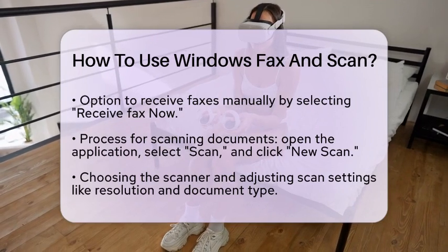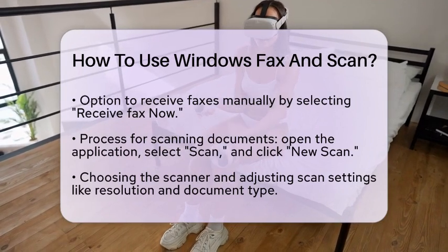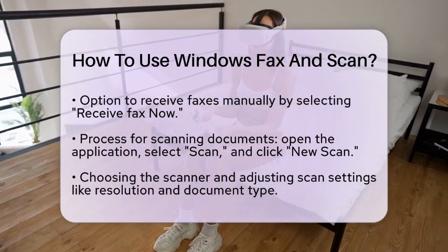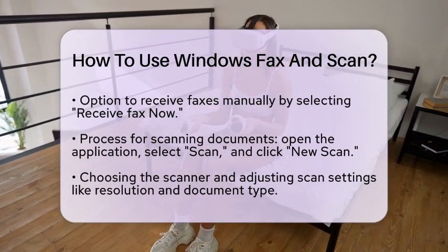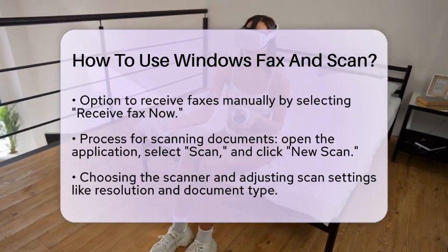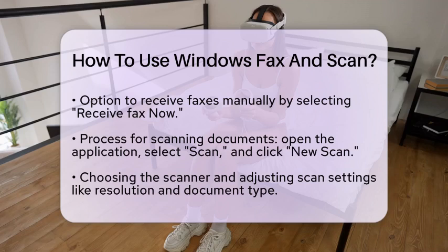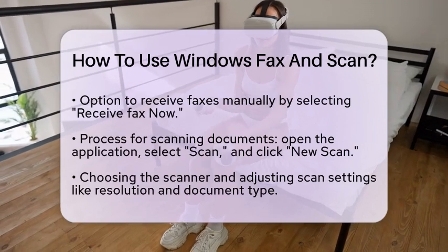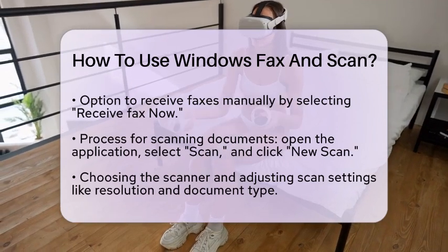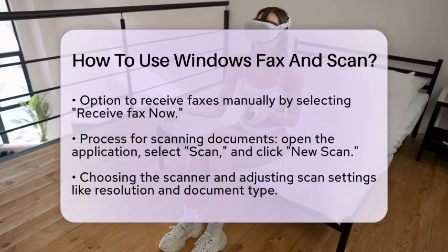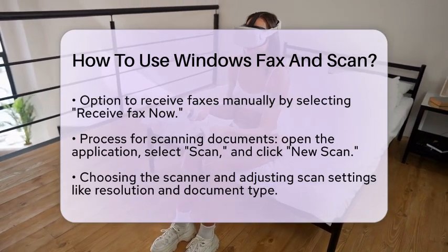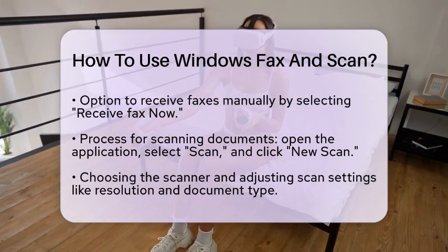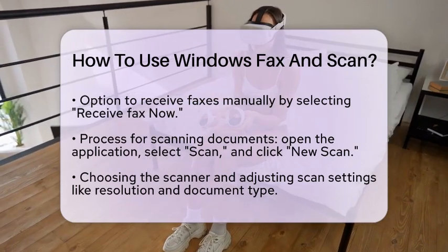Scanning documents is also simple. Open Windows Fax and Scan and select the Scan option. Click on the New Scan button. Choose your scanner and adjust the scan settings as needed, like resolution and document type. You can click Preview to see how your scan will look before saving it. If everything looks good, click Scan to proceed. Finally, click Save As to save your scanned document as a file, such as a PDF.